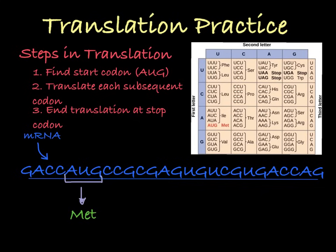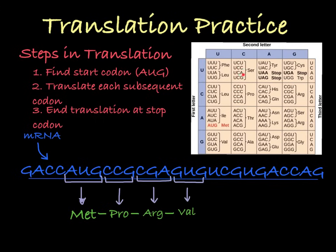I then move to the next codon, CCG, which codes for the amino acid PRO, which is proline. Then we have CGA, coding for arginine, and GUG, coding for valine, then UCG, coding for serine. Finally we hit UGA, which does not code for an amino acid — it's simply a stop codon, signaling the end of translation. Any codon after the stop codon does not get translated.